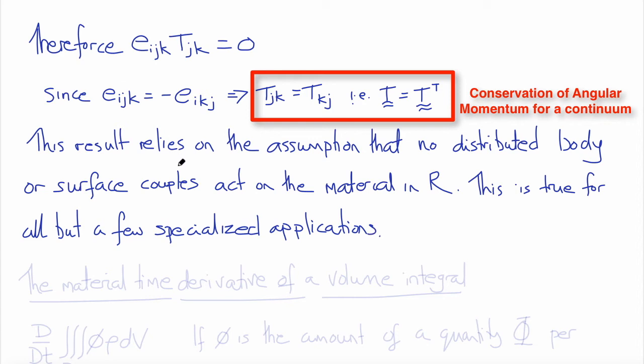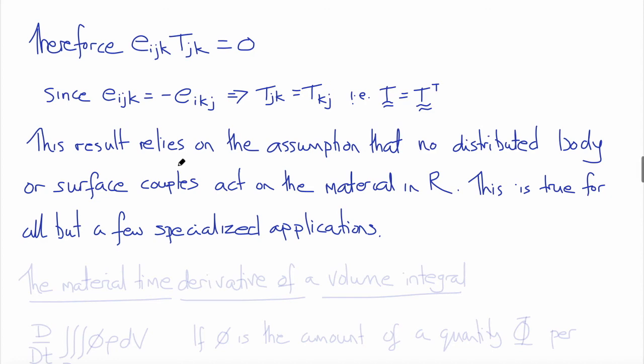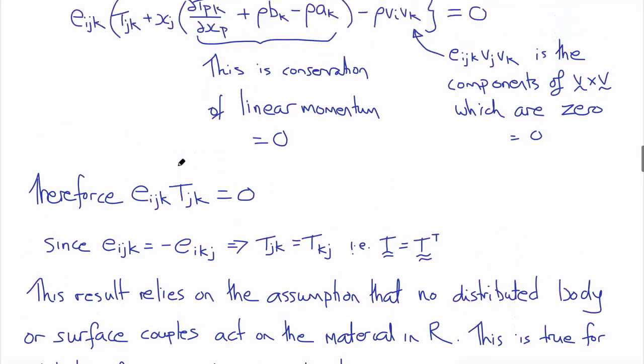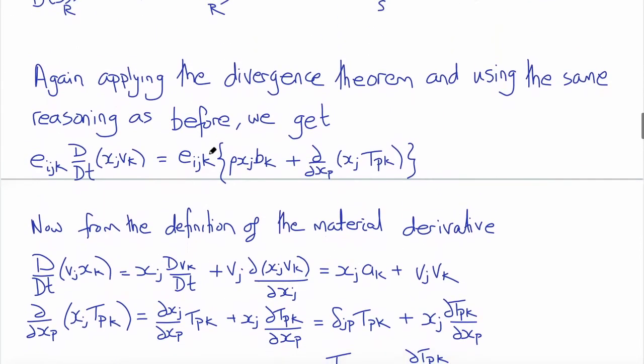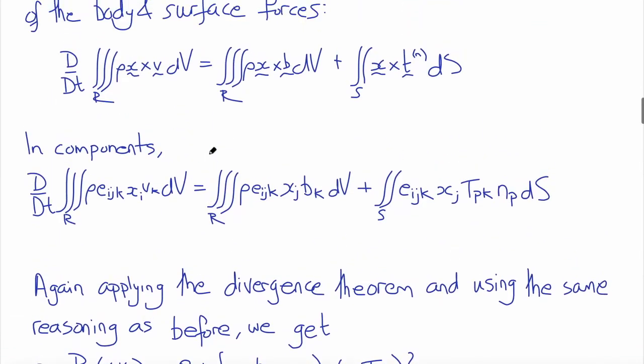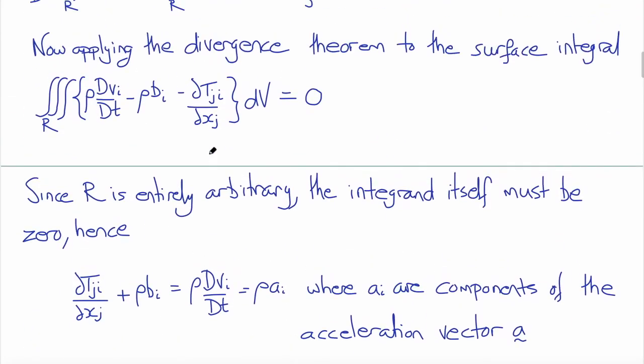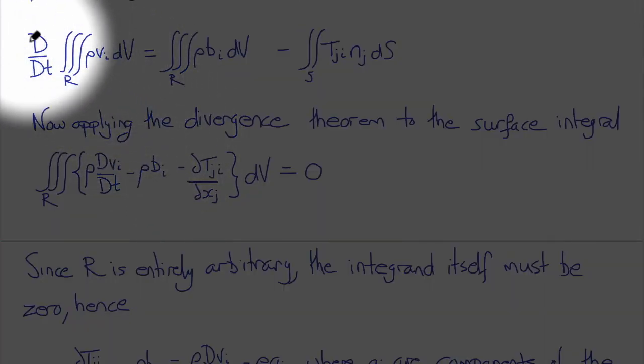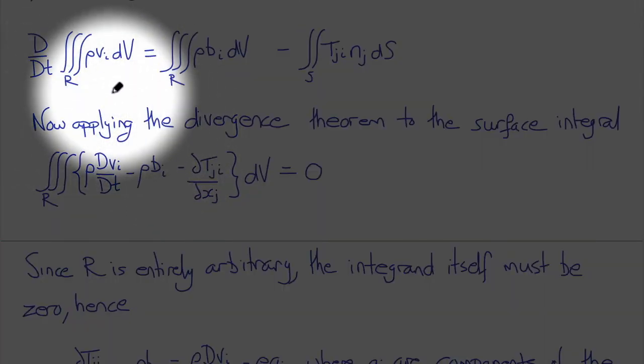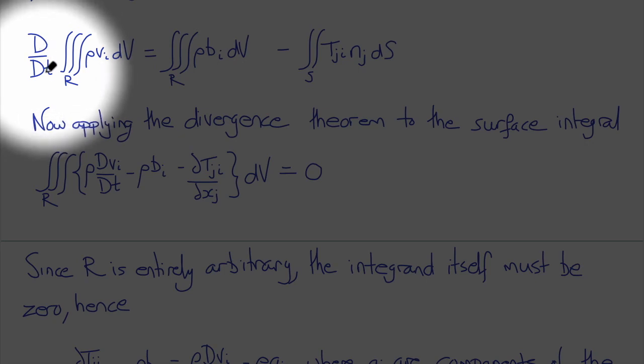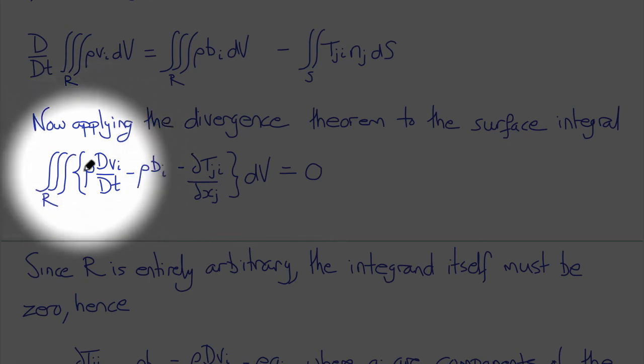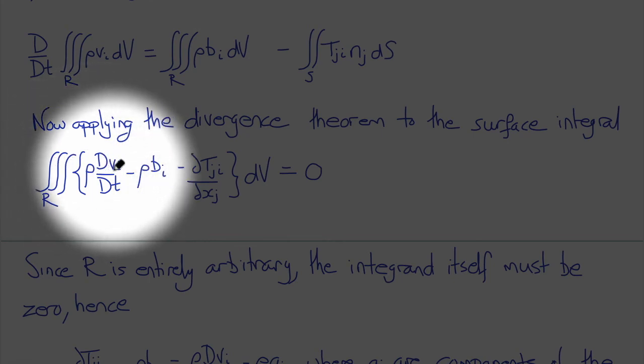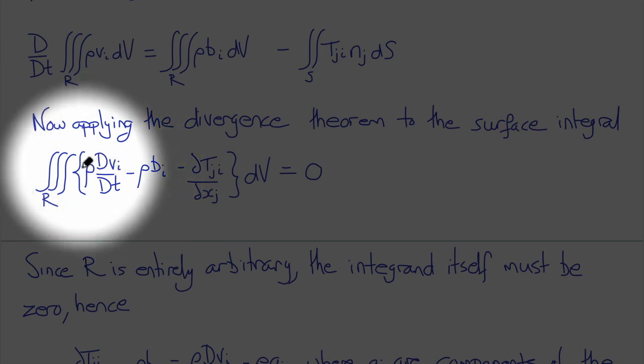This completes our derivations, but if you were observant you may have noticed that I did something that wasn't completely legitimate, or at least didn't appear to be. You'll notice here for example that the material time derivative of the volume integral of rho times VI I substituted with the volume integral of rho times the material derivative of V.